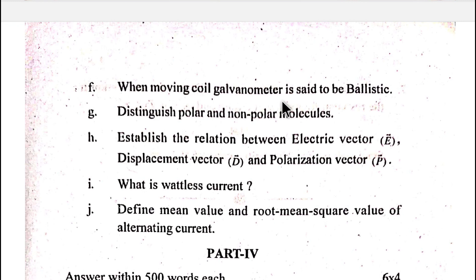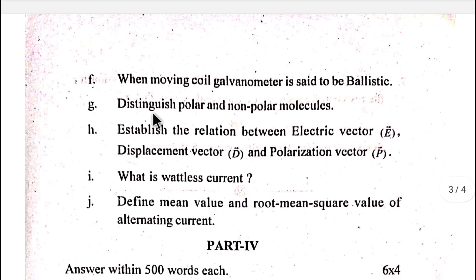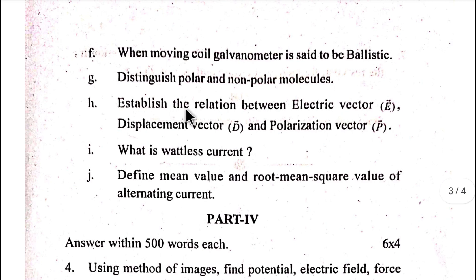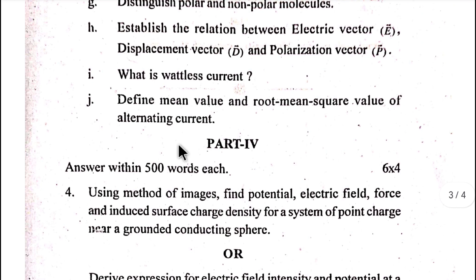When is a moving coil galvanometer said to be ballistic? Distinguish between polar and non-polar molecules. Establish the relation between electric field vector E, electric displacement vector D, and polarization vector P.